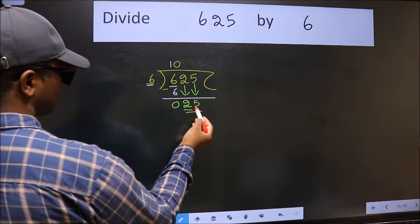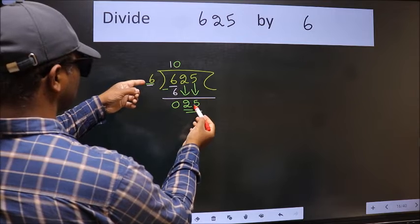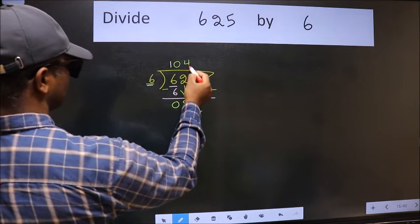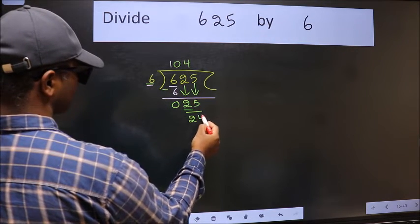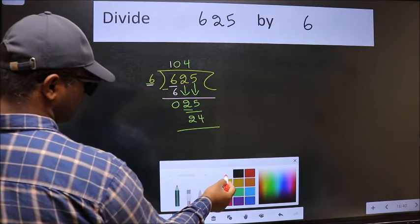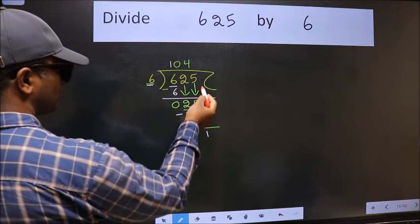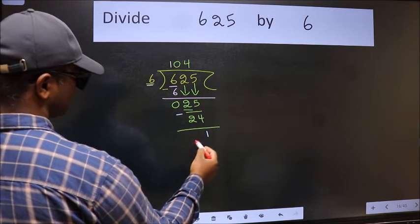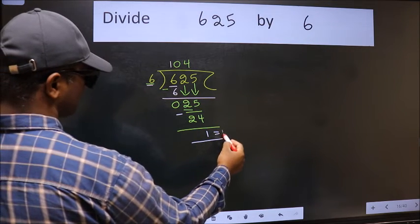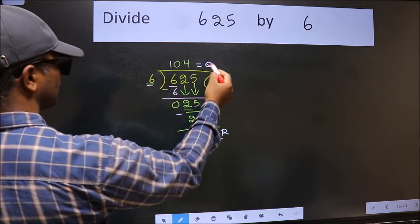Now 25. A number close to 25 in the 6 table is 6 fours 24. Now we should subtract. We get 1. No more numbers to bring down, so we stop here. This is our remainder and this is our quotient.